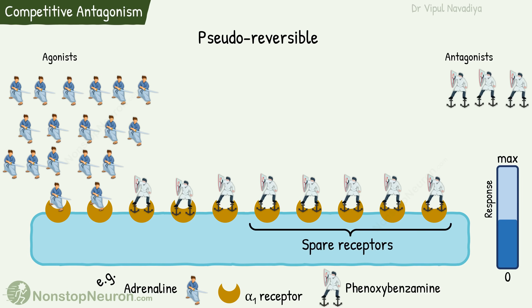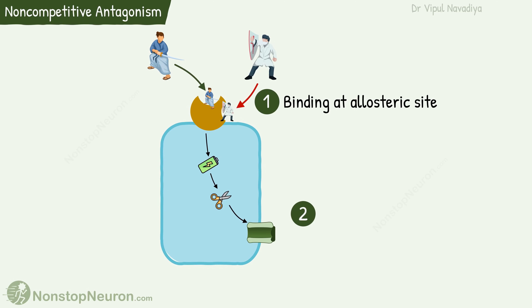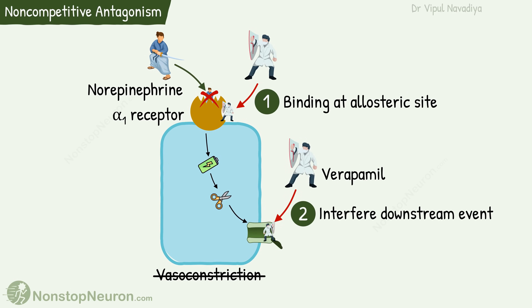Now let's talk about non-competitive antagonism. The agonist and antagonist do not compete for the same site. One mechanism is binding at the allosteric site — a site different from where the agonist binds — producing conformational changes in the receptor that prevent agonist activity. The second mechanism is interfering with downstream events. For example, verapamil blocks calcium channels, preventing the vasoconstriction produced downstream from norepinephrine's activation of alpha-1 receptors in vascular smooth muscle, making verapamil a non-competitive antagonist of norepinephrine.